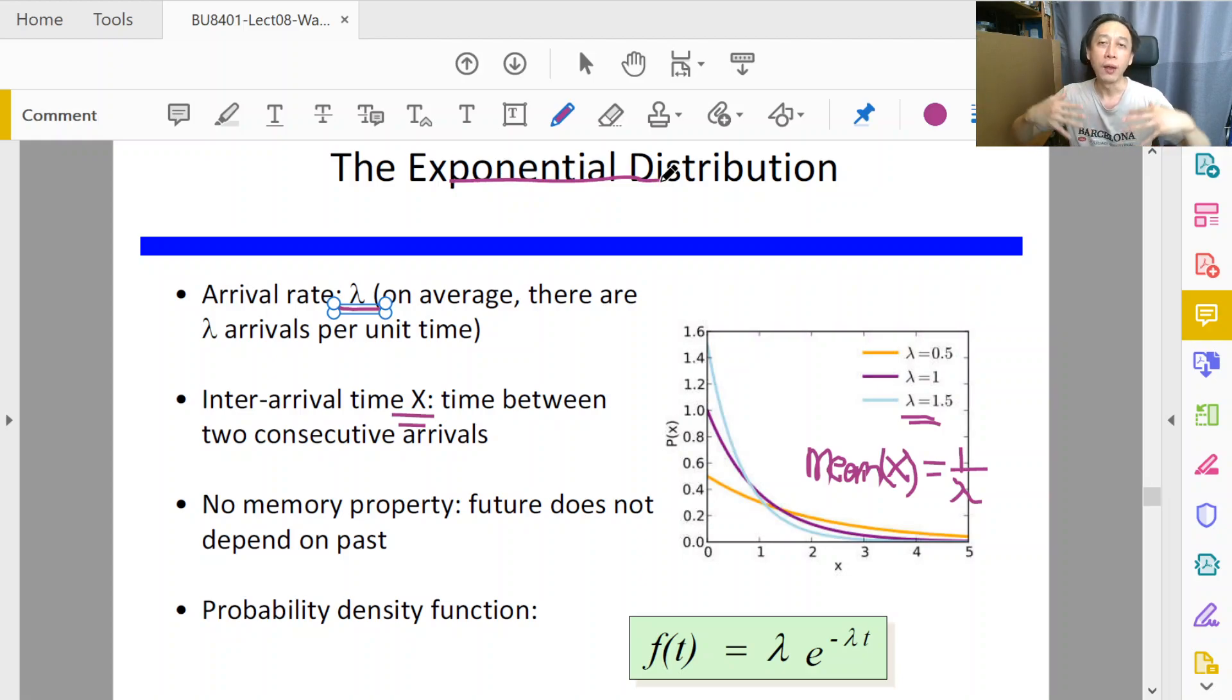The customers who spontaneously want the service from the server. So we have this huge group of potential customers in the calling population, and they may or may not want the service at a particular time.